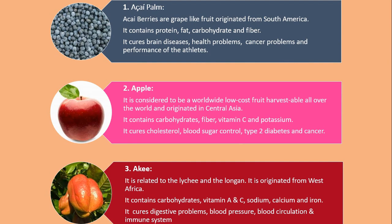Number 1. Acai palm. Acai berries are grape-like fruit originated from South America. It contains protein, fat, carbohydrate and fiber. It cures brain diseases, health problems, cancer problems and improves performance of athletes.